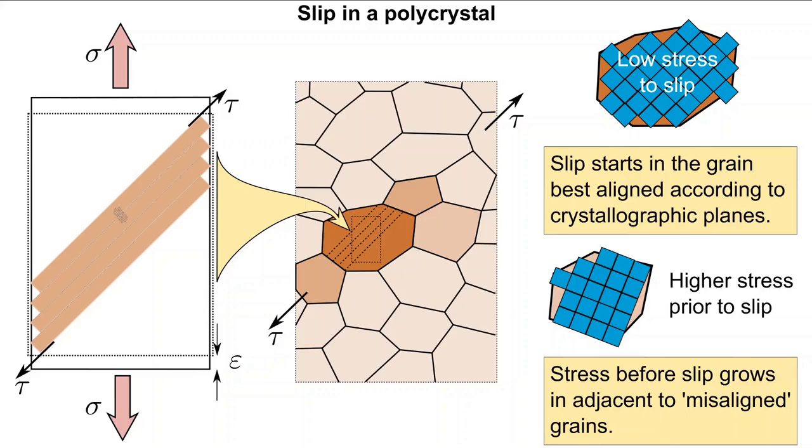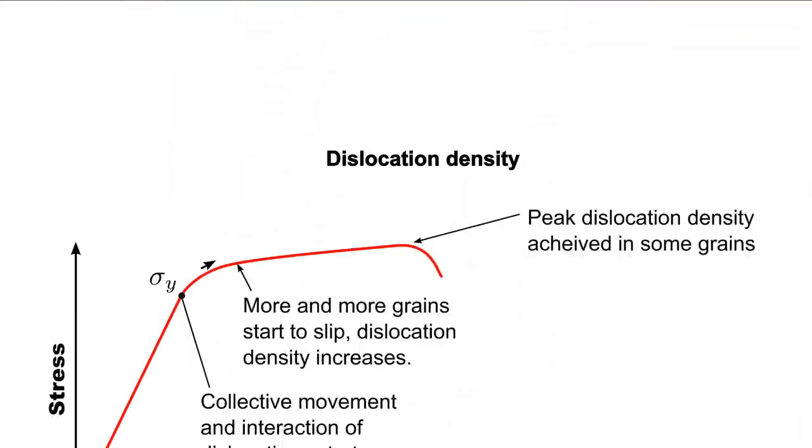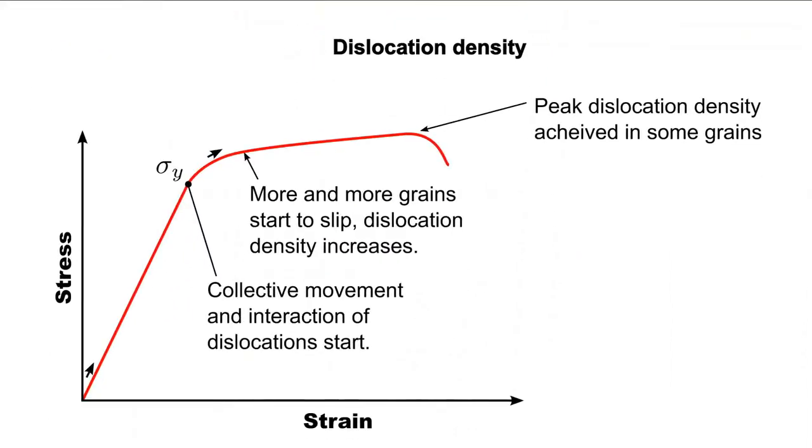We can now describe some of the features of the stress-strain curve as it starts to enter plasticity. So at the point of yielding, we have a collective movement and the interaction of dislocations. The degree to which this occurs initially is down to orientation of the grains, the underlying crystal structure, and slip systems available. As the stress increases, more grains start to slip, and the dislocation density increases due to dislocation interaction and piling up of dislocations at grain boundaries. There then comes to a point where no more dislocations can move in some grains, and we end up well on the road to failure.